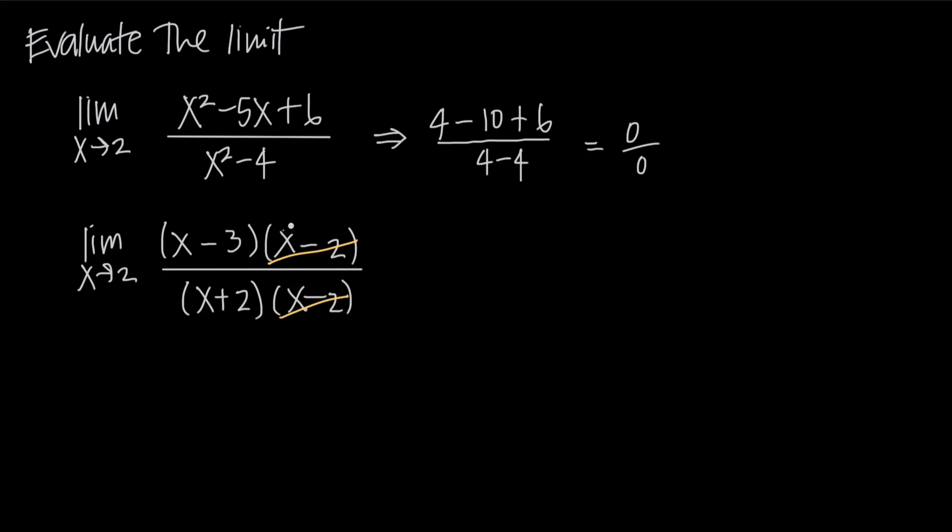When you do this, when you cancel a factor from the numerator and denominator, what we can say is that the value x equals 2 represents a removable discontinuity because we would have had a discontinuity at the point x equals 2. If we plugged 2 into this function in the denominator here, we'd have 2 minus 2 or 0. We'd have 0 in the denominator, that'd make the function undefined, so technically that might be a discontinuity.